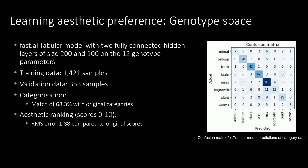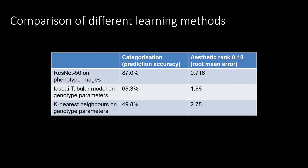We next looked at similar predictions based on the 12 genotype parameters instead of the rendered phenotype images. For these tests, we used the tabular model from the FastAI deep neural net library, using a configuration with two fully connected hidden layers of size 200 and 100. The results matched original category values in 68.3% of cases and had a root mean square error of 1.88 for aesthetic ranking scores. We got significantly better results when using the phenotype, which makes sense since categories and rankings were assigned by looking at rendered images. The FastAI tabular model also appears to get significantly better predictions than the simple k-nearest neighbours previously used in Species Explorer.